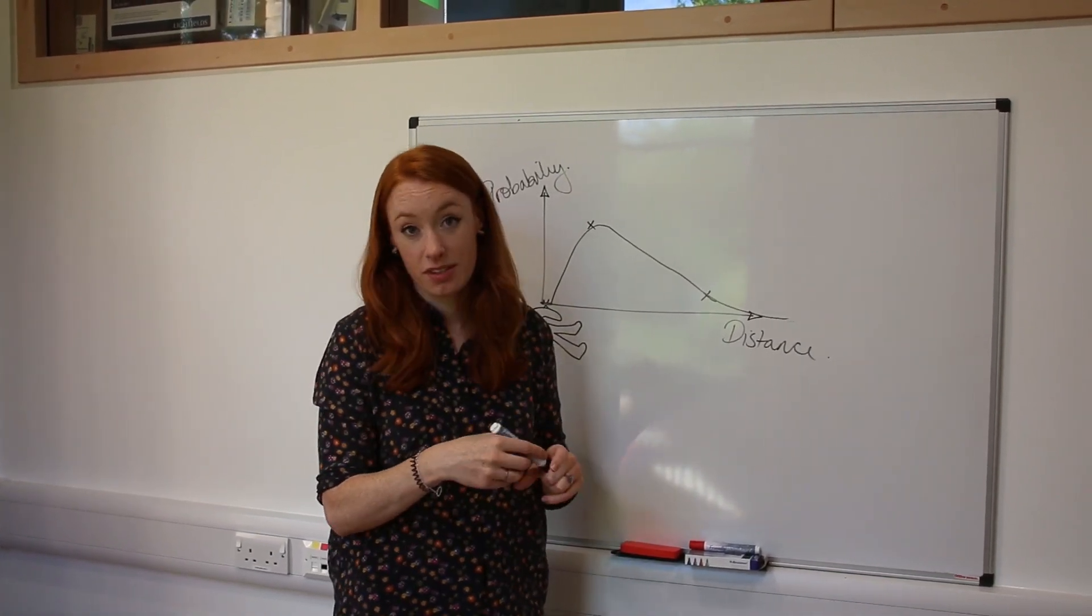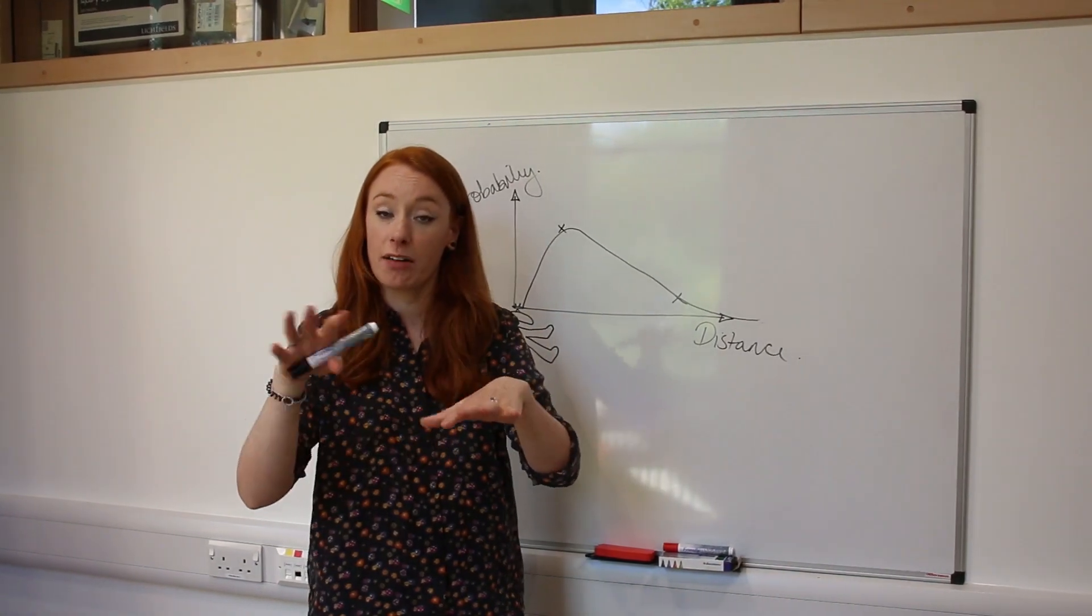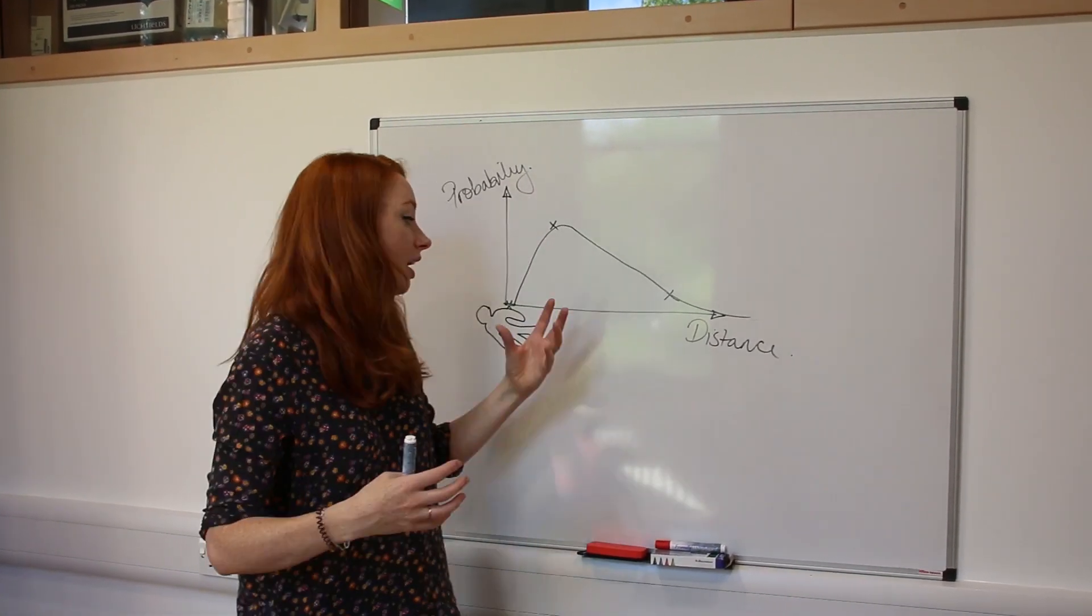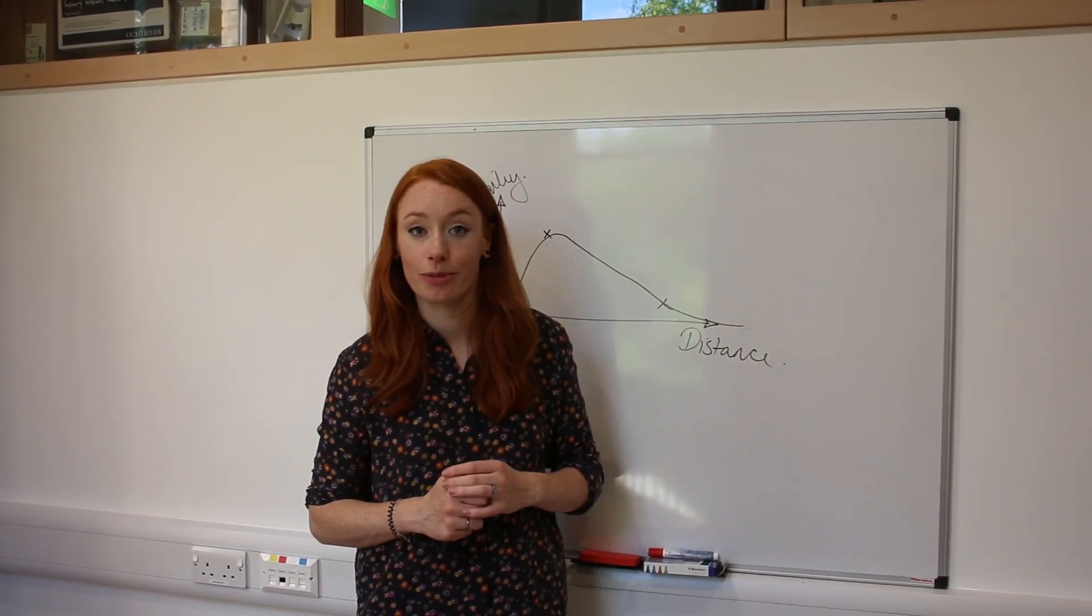Now if you've just got one curve, it doesn't really help you that much, but once you start layering them up, if you have more than one offense, you can end up with a really good idea of where you expect your murderer to come from.